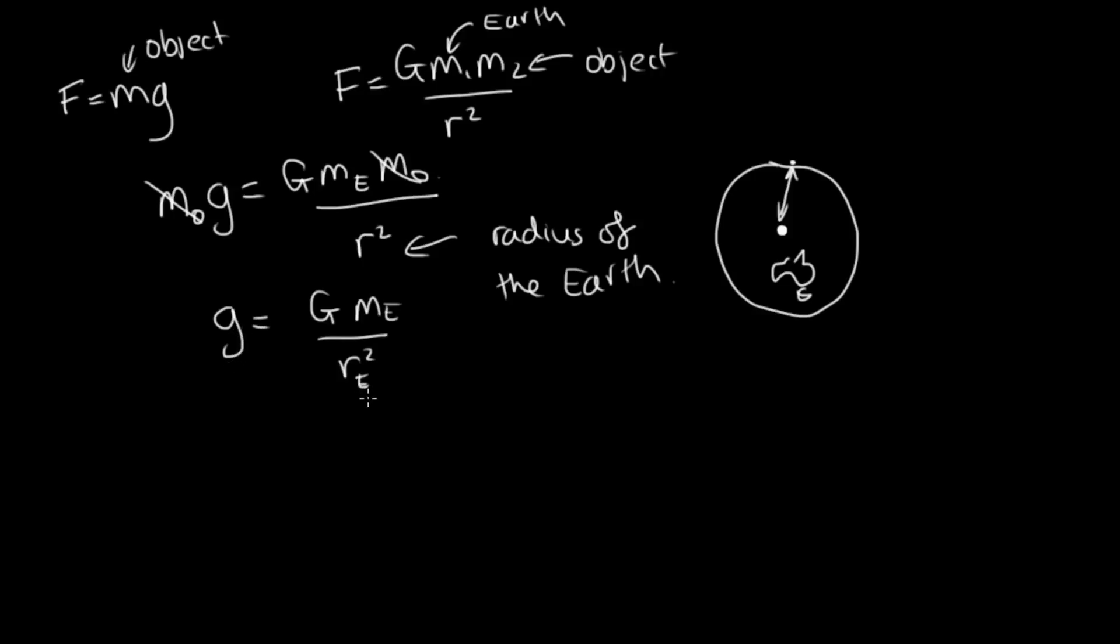And so this lets us calculate little g on the surface of the Earth. But we can actually use it on any planet we want. If this was Mars, we could put the mass of Mars and the radius of Mars.